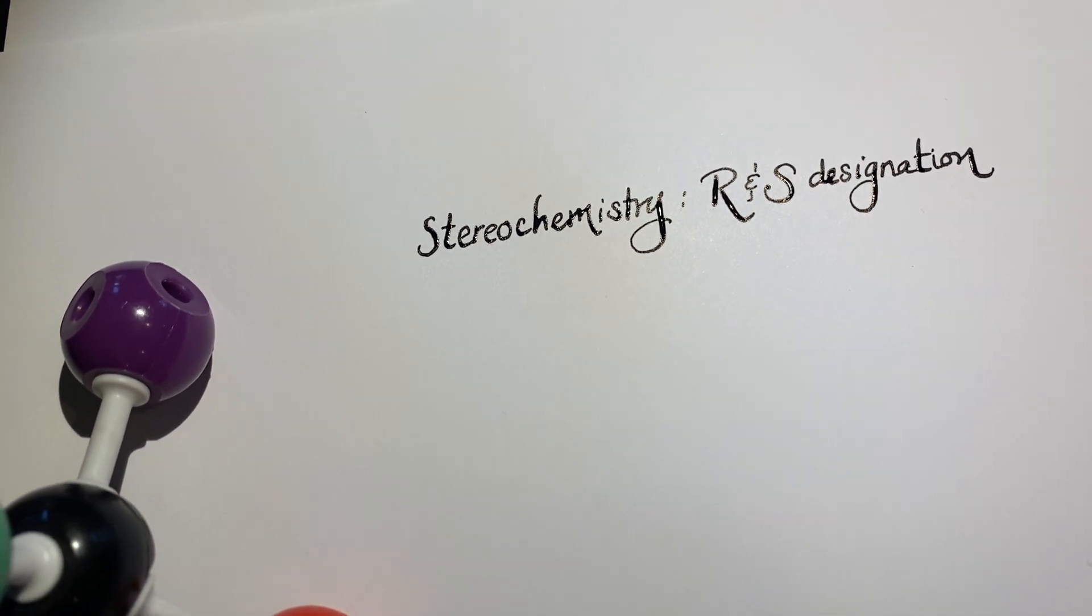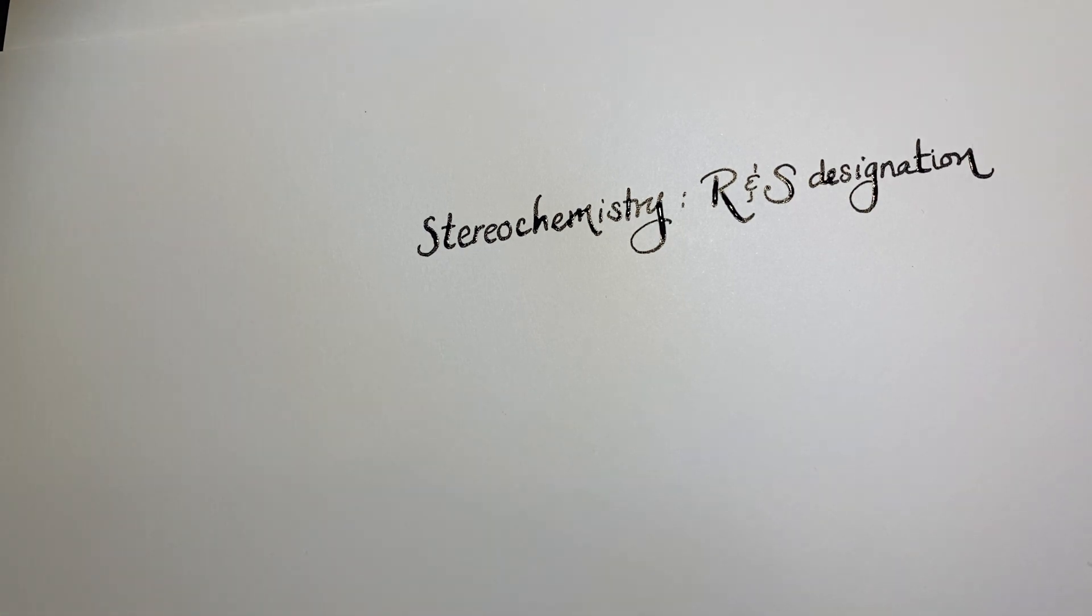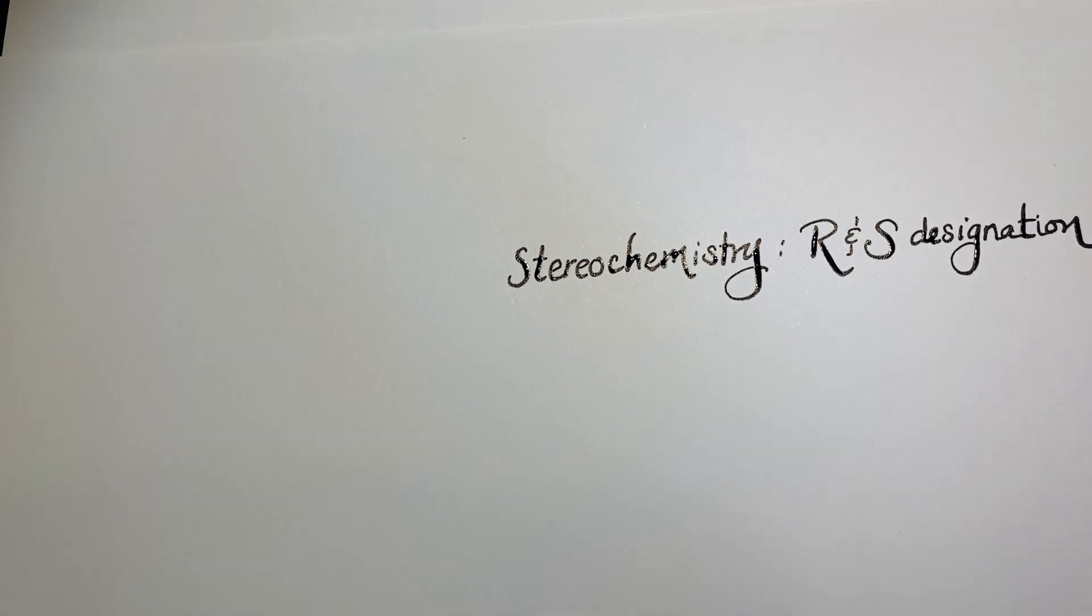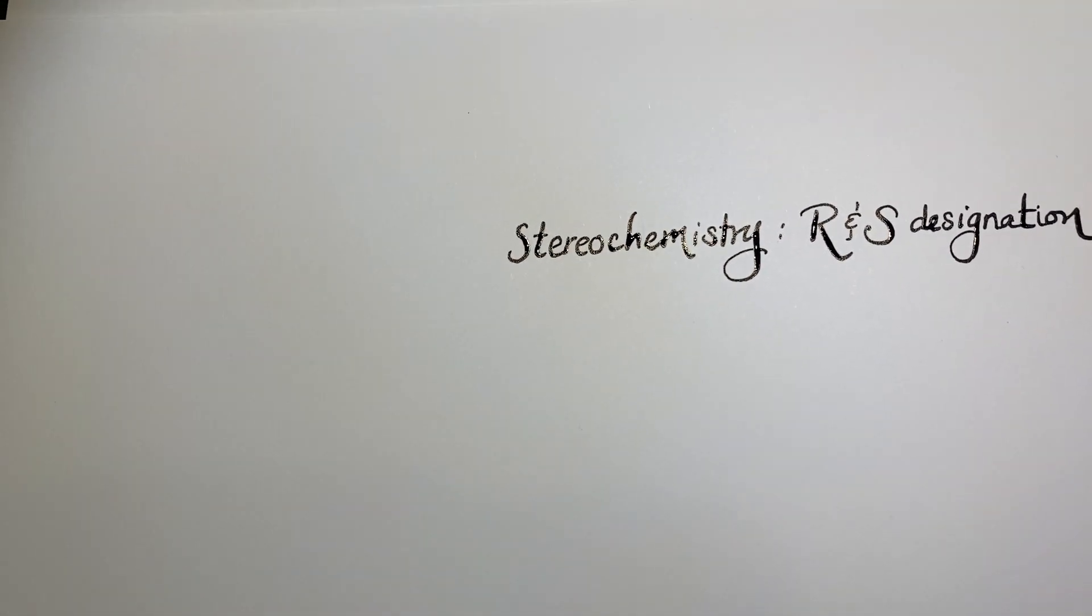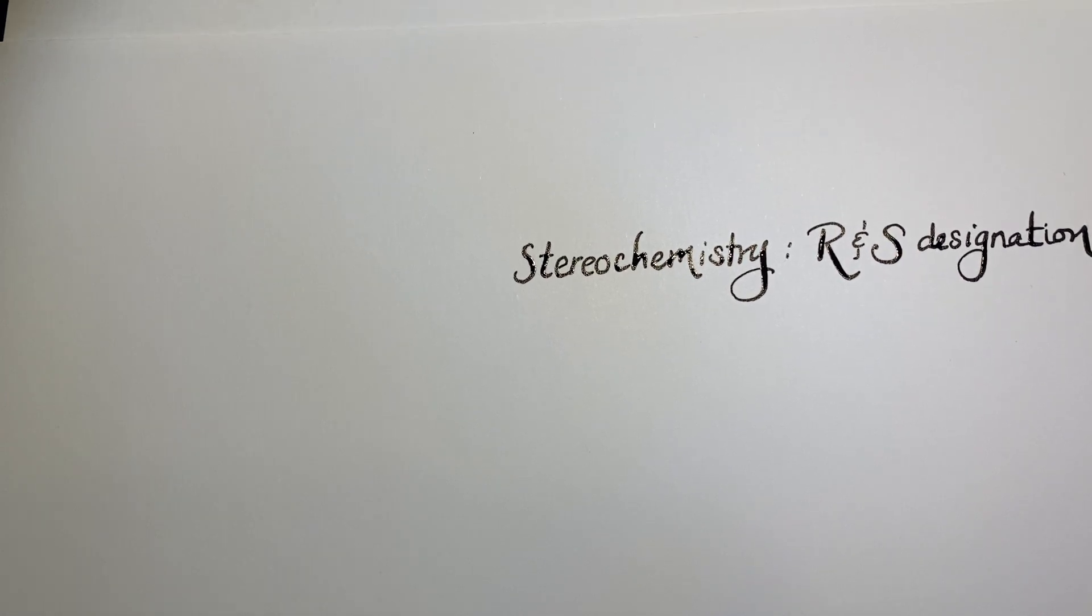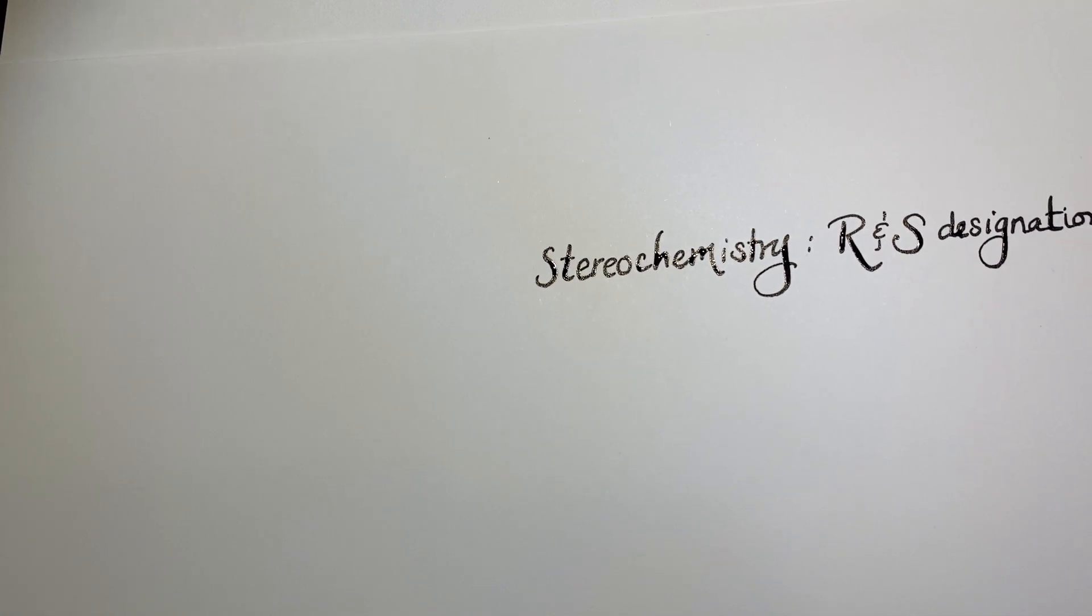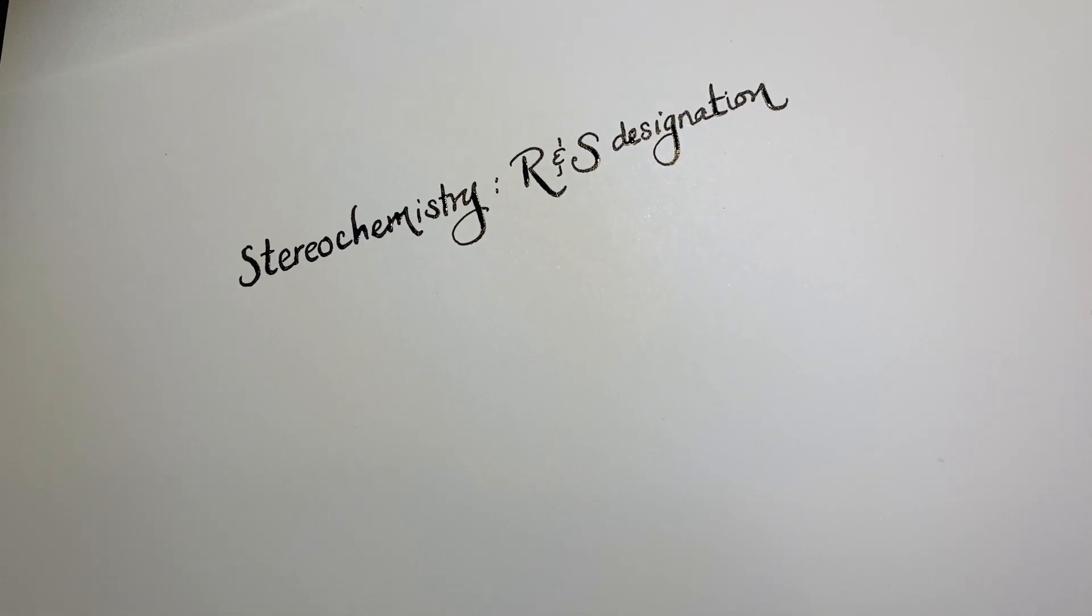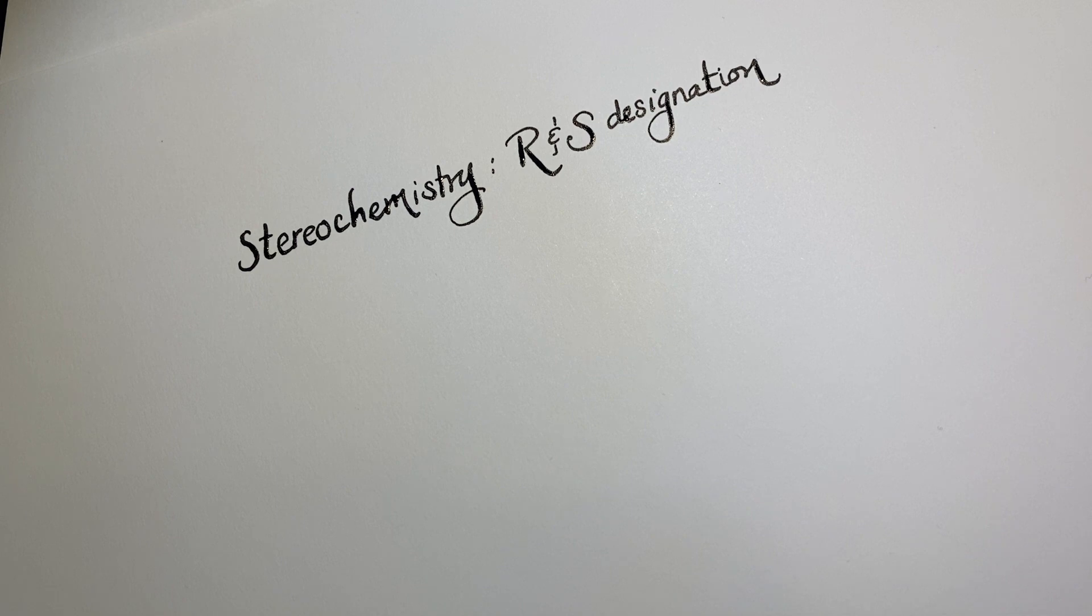So, we're going to learn about how to assign R versus S. I'm going to move my molecule out of the way. Alright. So, let's do some examples here. And with these examples, we'll go over the rules of how we're going to do the designation.